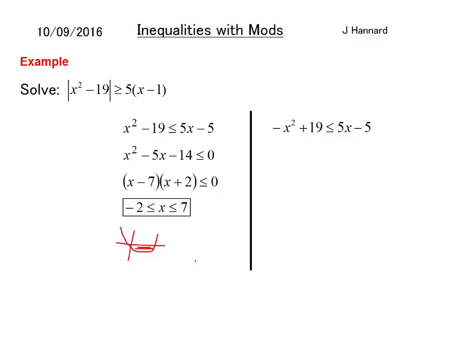The other possibility is the exact opposite. Which is minus X squared plus 19 is less than 5X minus 5. Tidying up you end up with that. That doesn't, well sorry, it does factorize. It didn't look like it did. But we've got 8 and minus 3.